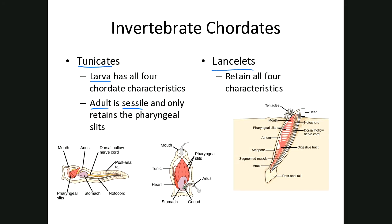In the tunicate, the adult is sessile — not moving. Of the four chordate characteristics, the only one that remains through adulthood is the pharyngeal slits. The lancelet, shown here burrowed down in the sand, retains all four characteristics into adulthood — you can see the tail is present, the pharyngeal slits are present, the notochord, and then the dorsal hollow nerve cord.